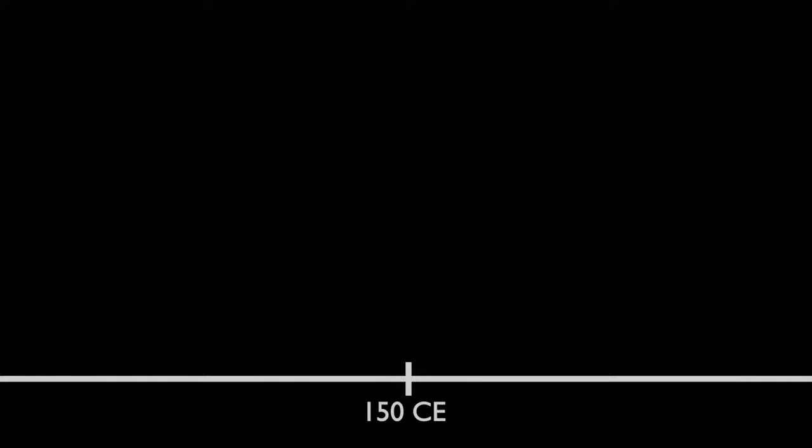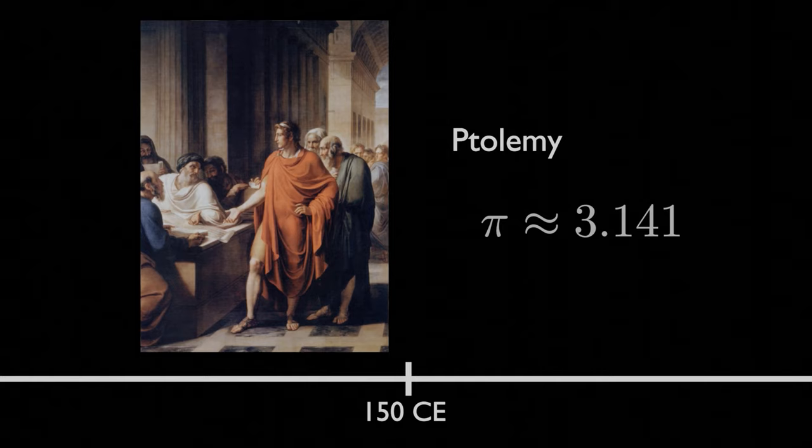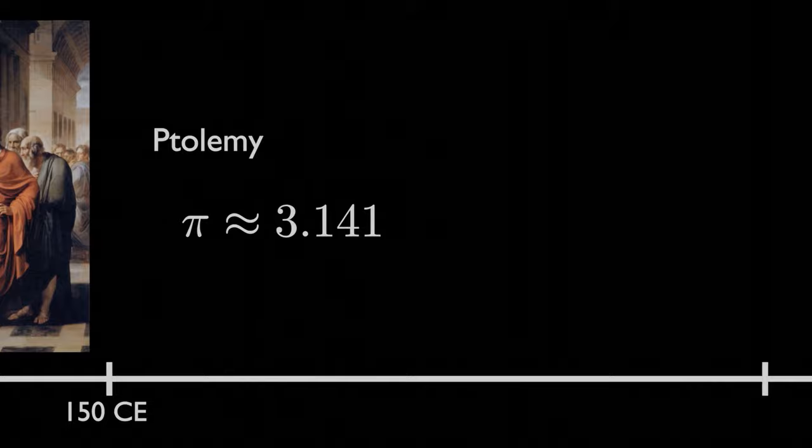Another 400 years would pass until, in roughly 150 years into Common Era, another ancient mathematician and astronomer, Ptolemy, would improve our approximation of Pi by another decimal place to give us 3.141.